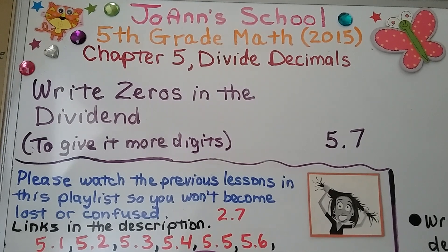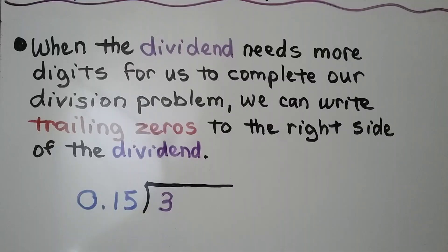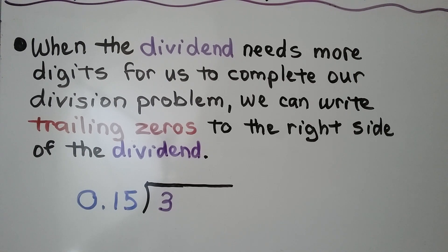Lesson 5.7: Write zeros in the dividend to give it more digits. When the dividend needs more digits for us to complete our division problem, we can write trailing zeros to the right side of the dividend.